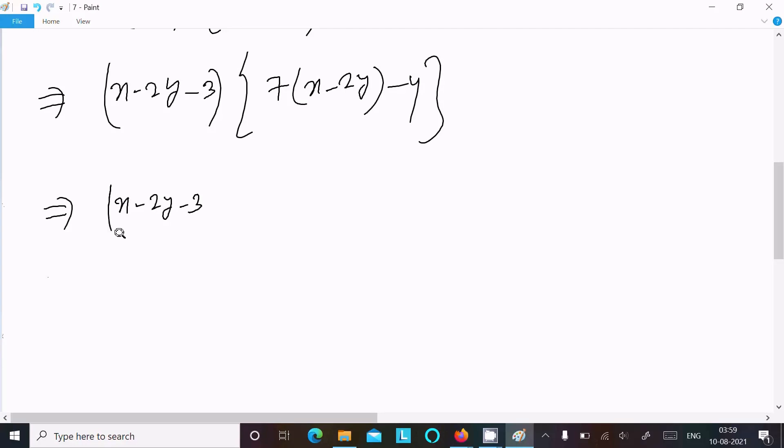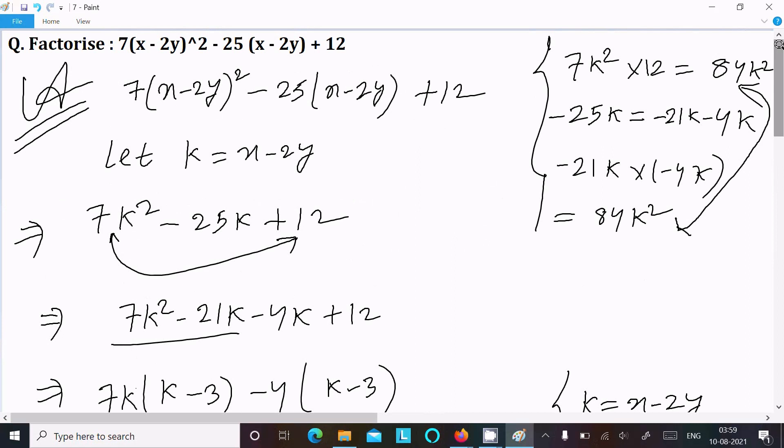Now the next is x minus 2y minus 3, and this here 7x minus 14y minus 4. So this is the factorization of this equation. This is the way we can do the factorization. Here assume k equal to x minus 2y, after that equation looking quite simple.